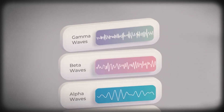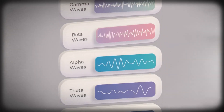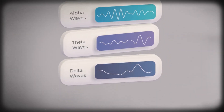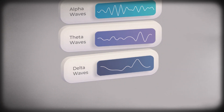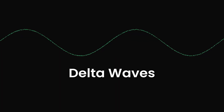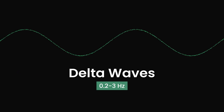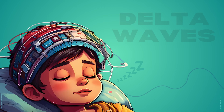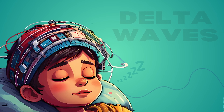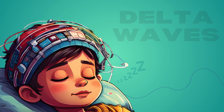Basically, there are five types of brain waves that occur at different stages of brain activity. Let's start with delta waves, which occur at 0.2 Hz to 3 Hz. Delta waves are very low frequency brain waves that occur during very deep, dreamless sleep.